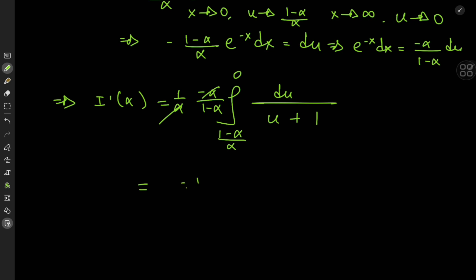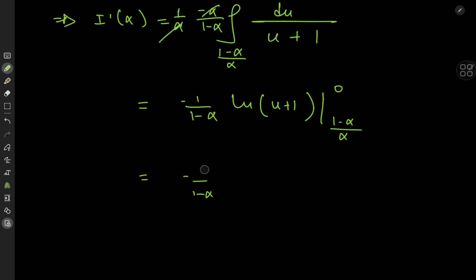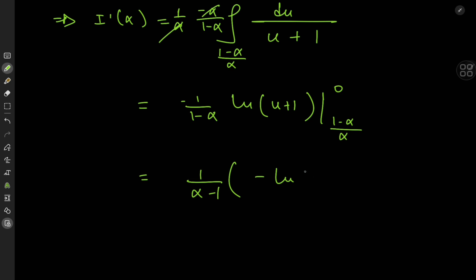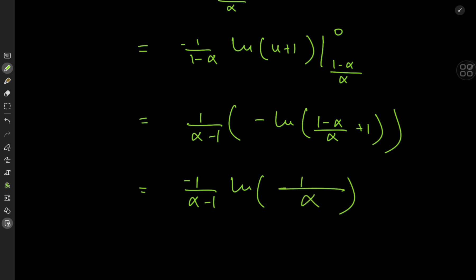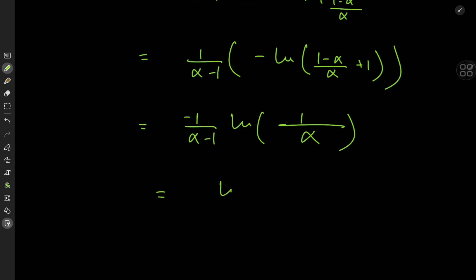After the substitution we get some cancellation: negative one over one minus alpha, which we write as one over alpha minus one, times the logarithm of u plus one, evaluated from one minus alpha over alpha to zero. Evaluating these limits: at u equals zero we have log one which is zero, minus the logarithm of one minus alpha over alpha plus one. After simplification — one minus alpha plus alpha divided by alpha — we're left with one over alpha times log of one over alpha, which equals negative log alpha. So the derivative of i with respect to alpha equals log alpha divided by alpha minus one.